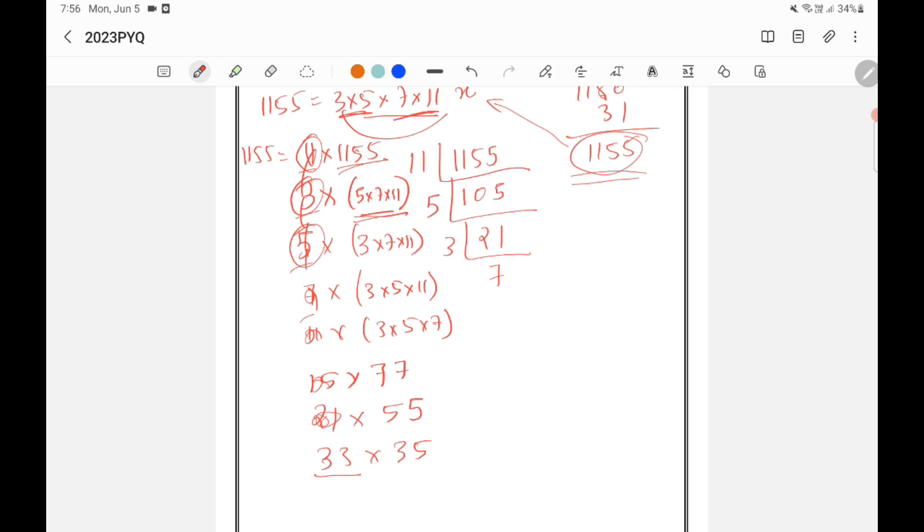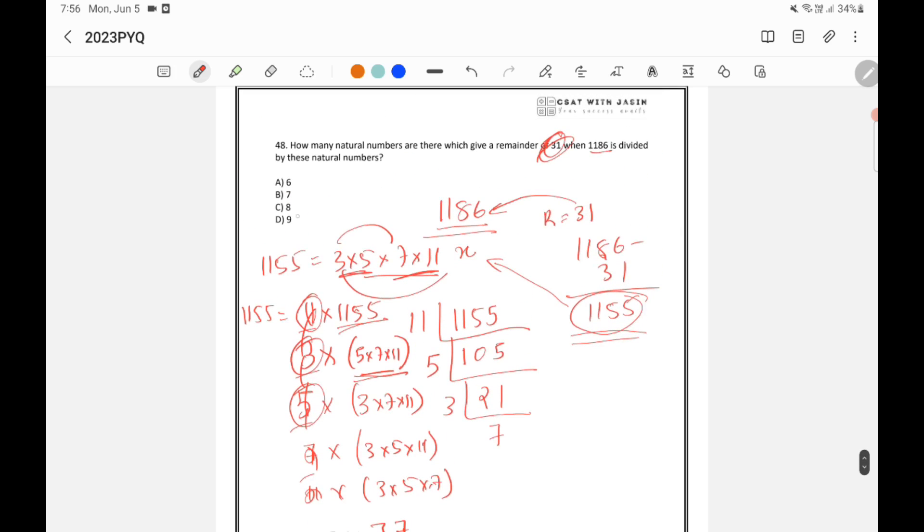So how many total are there? 1, 2, 3, 4, 5, 6, 7, 8, 9. There are total 9 possibilities. So option B is the right answer.